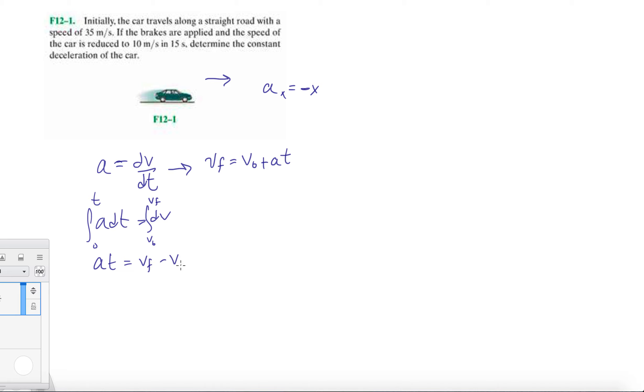The car reduced to Vf = 10 meters per second, and V initial was 35 meters per second. So then we get a times t. How much time did it take to get from 35 to 10? 15 seconds—they give us that. We don't need to do any unit conversions because everything is in meters per